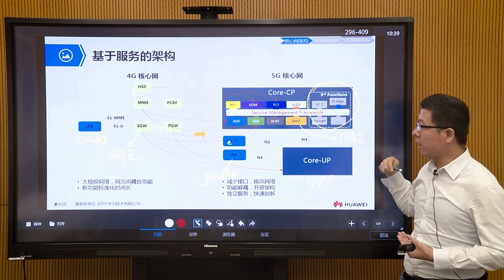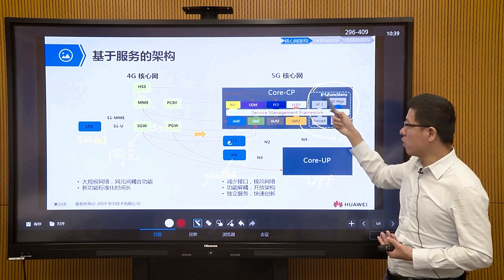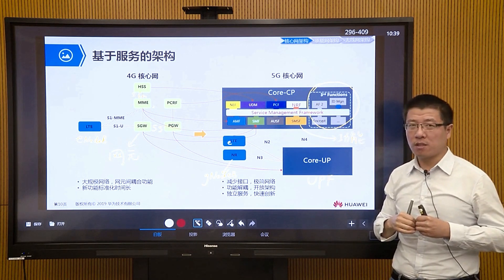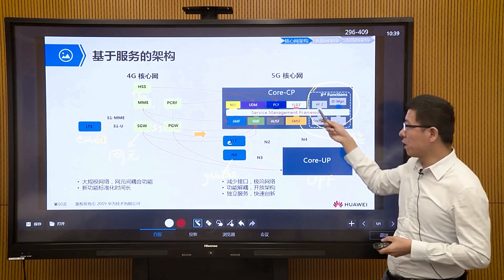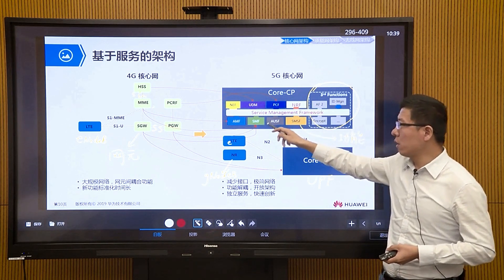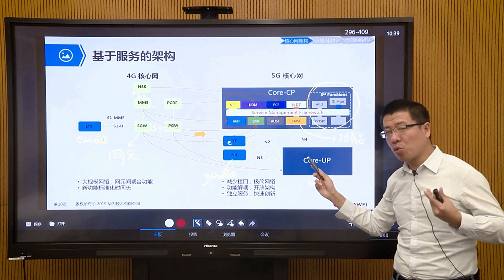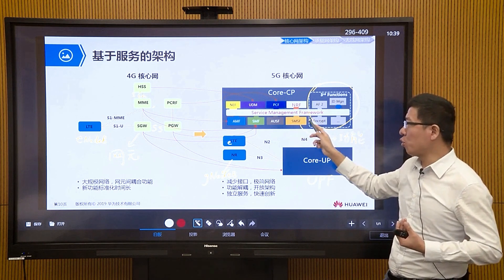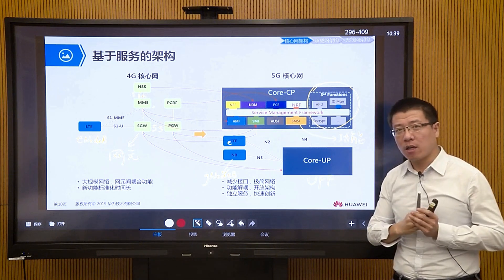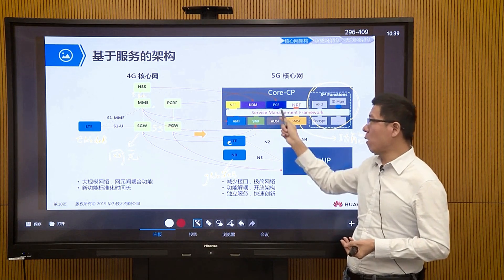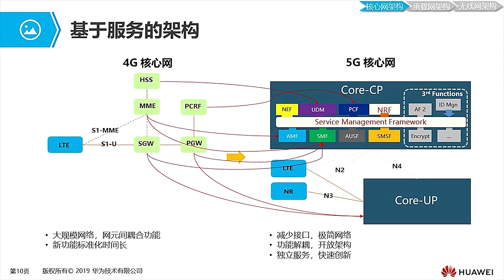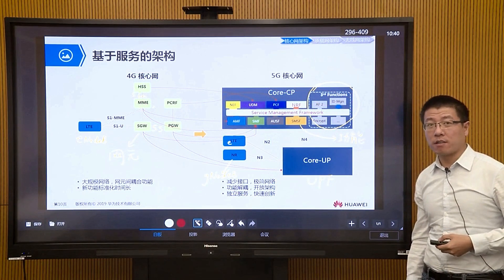To summarize, the key characteristics of the 5G core network architecture are: control plane and user plane separation; both can be deployed on cloud data centers (native cloud); support for slicing, because splitting core network elements into many functions allows different business demands to call different function combinations — for example, one application may need four functions in one slice, another may need eight functions in another slice. This flexible slicing technology enables vertical industry businesses through the 5G core network.